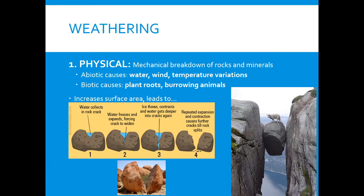To start, we look at weathering and there are two types: physical weathering and chemical weathering. Physical weathering is the mechanical breakdown of rocks and minerals. It can be caused by abiotic and biotic factors and it leads to an increase in surface area. Water is a huge part of what makes this happen. It creates phenomenal things like the Grand Canyon or this rock just suspended here.